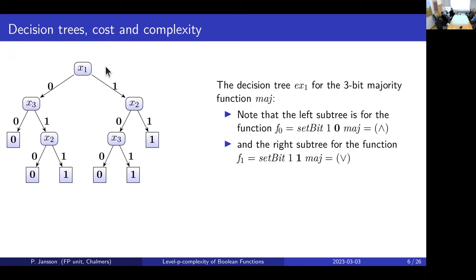Let's look at what happens with the majority function on three bits when you set bit one to zero. The function that you had was three-bit majority, but one step down on the left, you've got AND — because the only way to get majority one is if both remaining bits are one. So you go from three-bit majority to AND to constant false. On the other side, if you have a one, it becomes OR. The function changes as you walk down the tree.